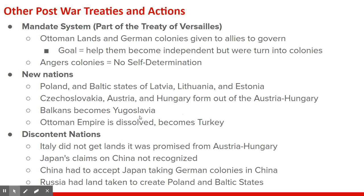This led many nations to be discontent with the treaty, and this would be fertile ground for World War II — the nations most angry about the Treaty of Versailles would be the nations to start World War II. Italy didn't get any of the lands promised from Austria-Hungary. Japan's claims on China weren't recognized, making Japan more militant in Asia. China had to accept Japan getting some of the former German colonies and port cities in China, which the Chinese resented. Russia was angry because it lost a lot of land to create Poland and the Baltic states. Germany, Italy, and Japan — along with the new Soviet Russia — were all angry, and those are the very nations that would start World War II.